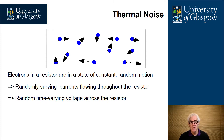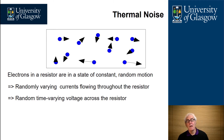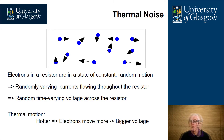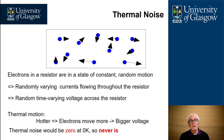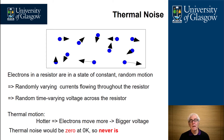As you heat the resistor up, the electrons get more and more excited and generate a larger voltage. If you cooled that resistor down to zero there would be no electron movement whatsoever, so there'd be no noise. But we can never reach absolute zero, so there's always some noise associated with electron movement randomly around any substance or conductor.